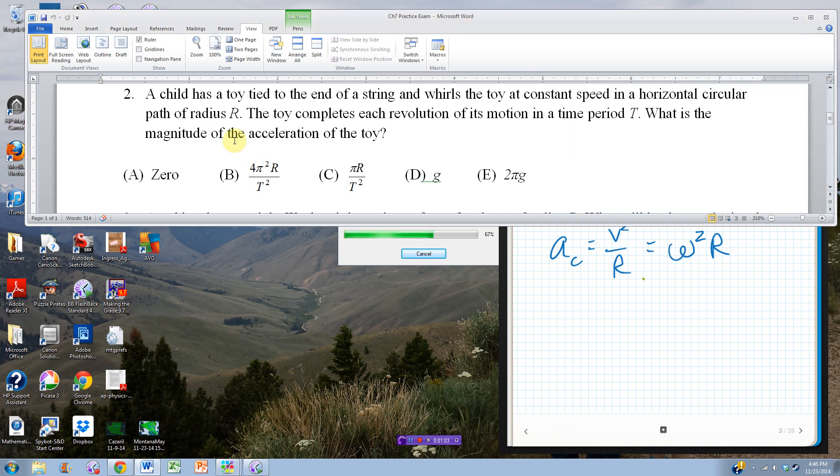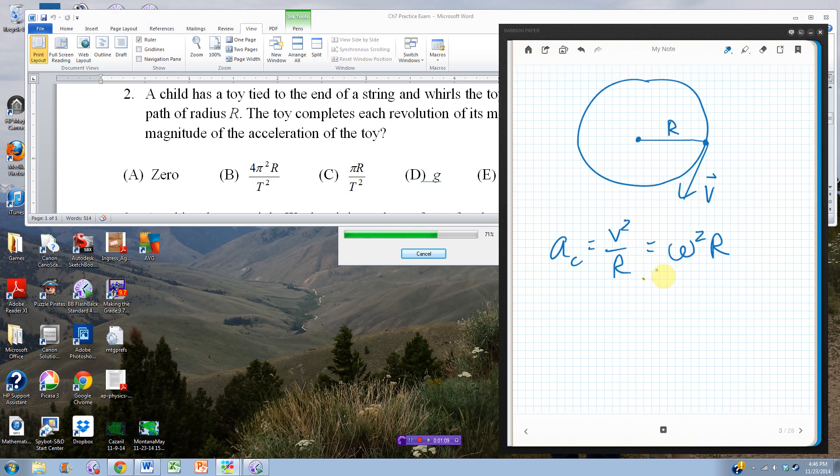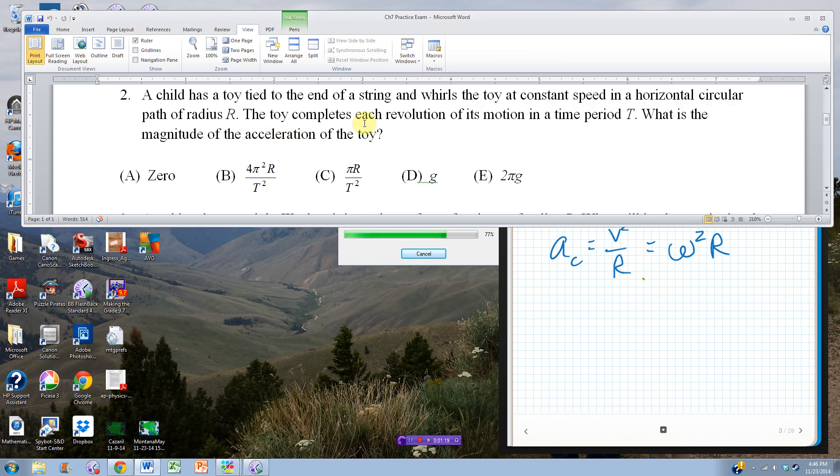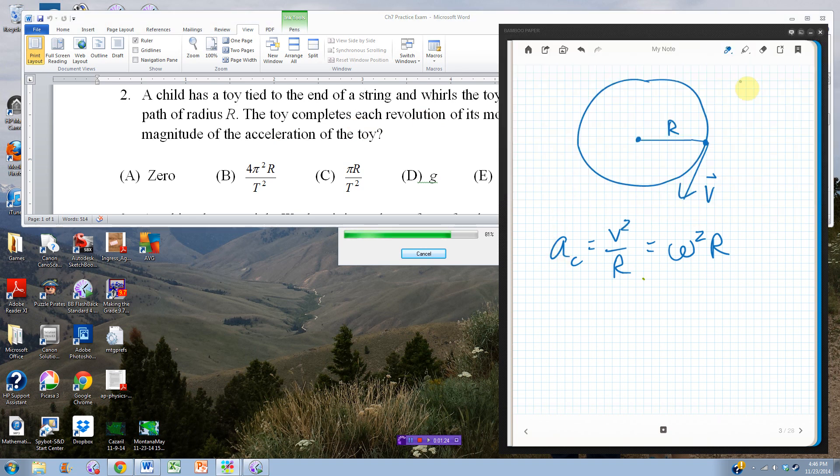So that's not the answer for any of these. Somehow I need to put these in terms of something else that will match one of these. Well, they said that it makes each revolution in a time period t. So I could replace v, which is distance over time, the distance it goes is the circumference all the way around, which would be 2 pi r, and then the t would be period.